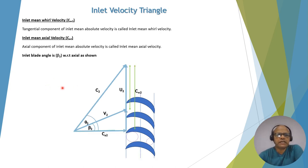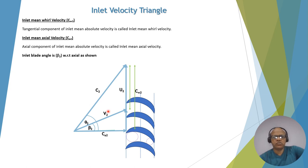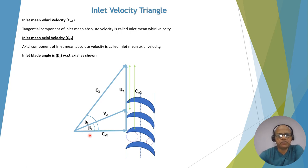Now, the inlet mean whirl velocity CW2 is the tangential component of C2, and the axial component of C2 is called CA2, the inlet mean axial velocity. Beta 2 is the inlet mean blade angle, because the blade angle also changes along the blade height, so we take the mean position. Beta 2 is the inlet mean blade angle, measured from the axial direction.